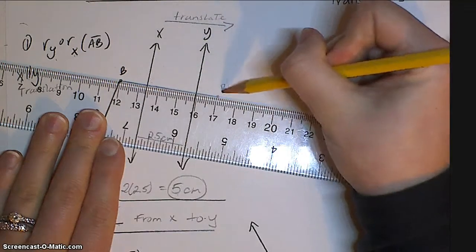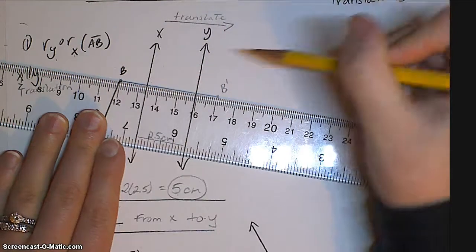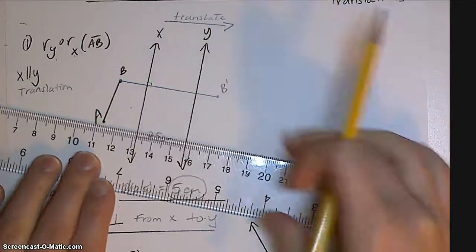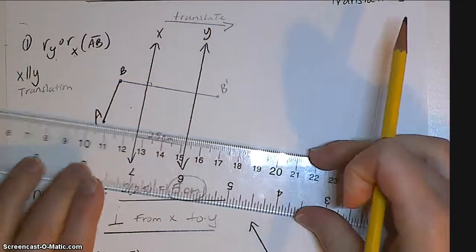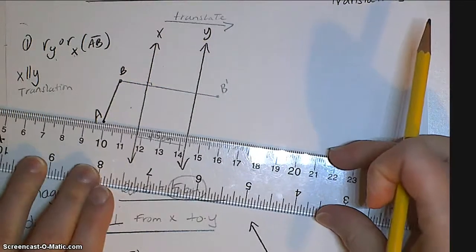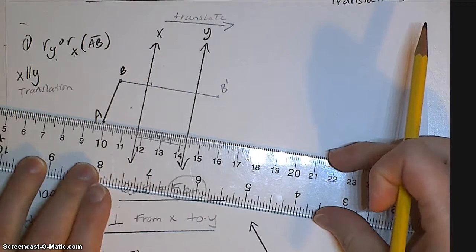And now I'm going to label that b' and I only need one prime now because we know that this is a translation. We're not actually going to draw out the double reflection anymore, unless you want to.